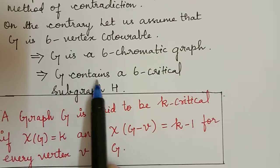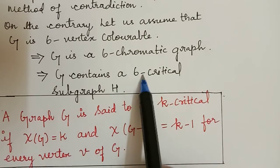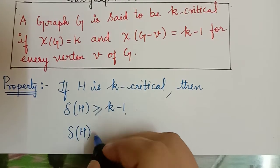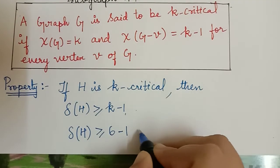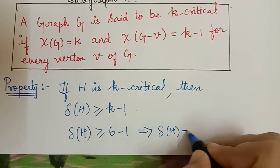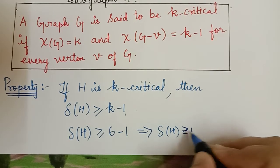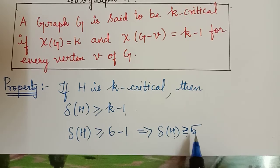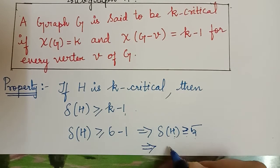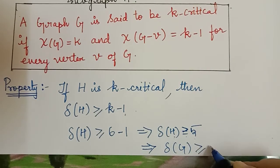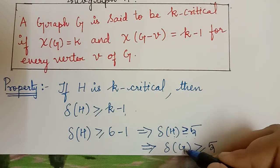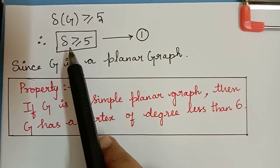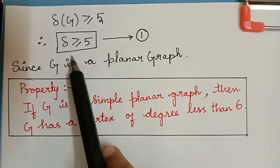Now G contains a six-critical graph, so the value of k is equal to 6. From this property we obtain that delta(H) is greater than or equal to 6 minus 1, which implies delta(H) is greater than or equal to 5. Because H is a critical subgraph of G, delta(G) will also be greater than or equal to 5. Let us mark this as equation 1.